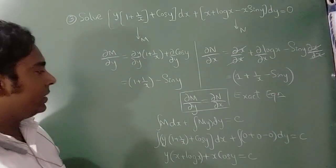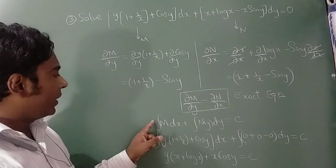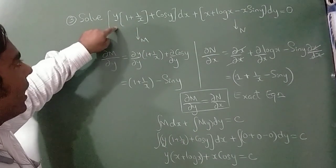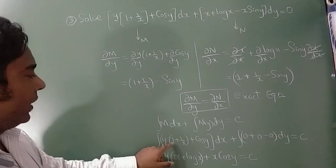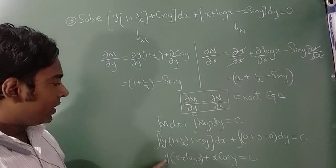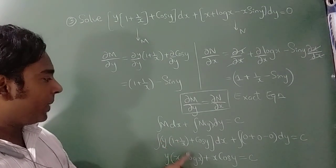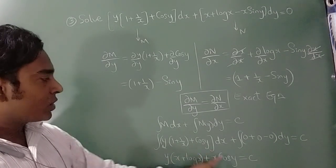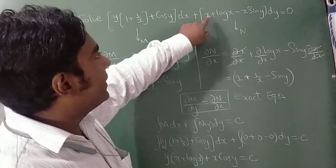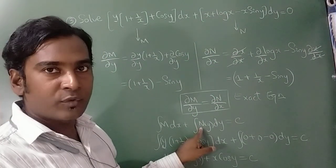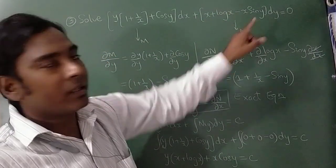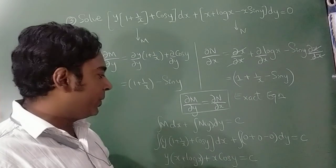For the solution, integration of M dx + integration of N (y-only terms) dy = C. M = y(1 + 1/x + cos y). Integrating with respect to x with y fixed: integration of 1 is x, integration of 1/x is log x, and cos y·x remains as x cos y. All terms in N contain x, so I write zero for that part. Final answer: y(x + log x) + x cos y = C.